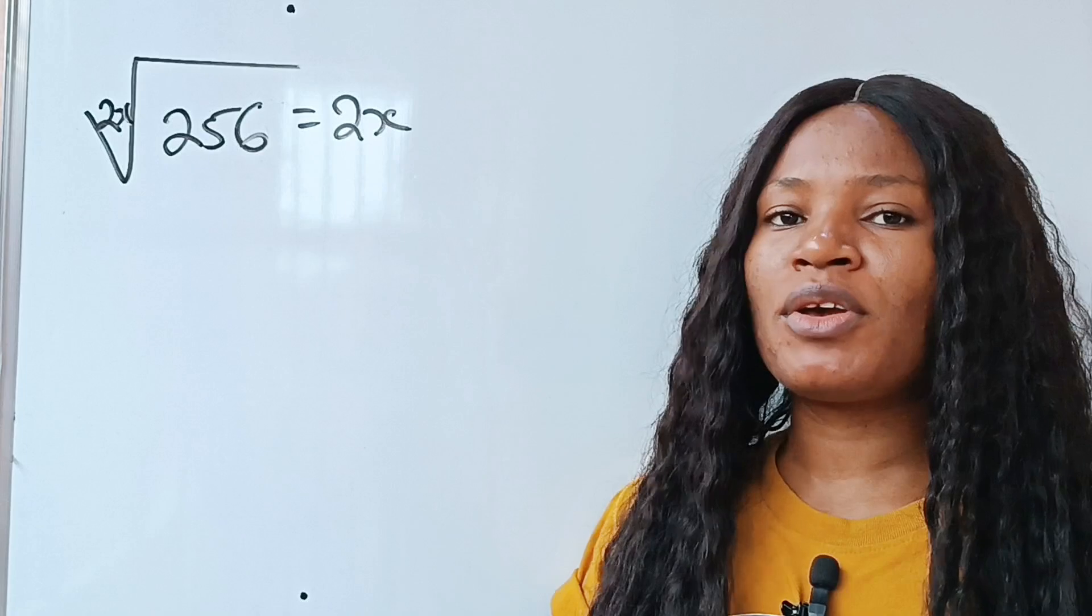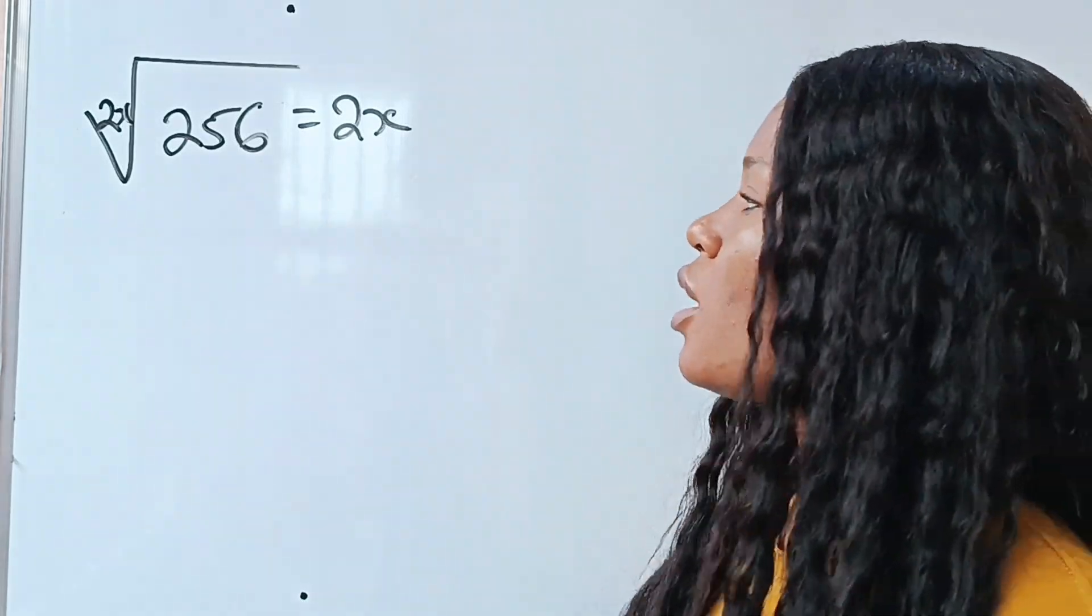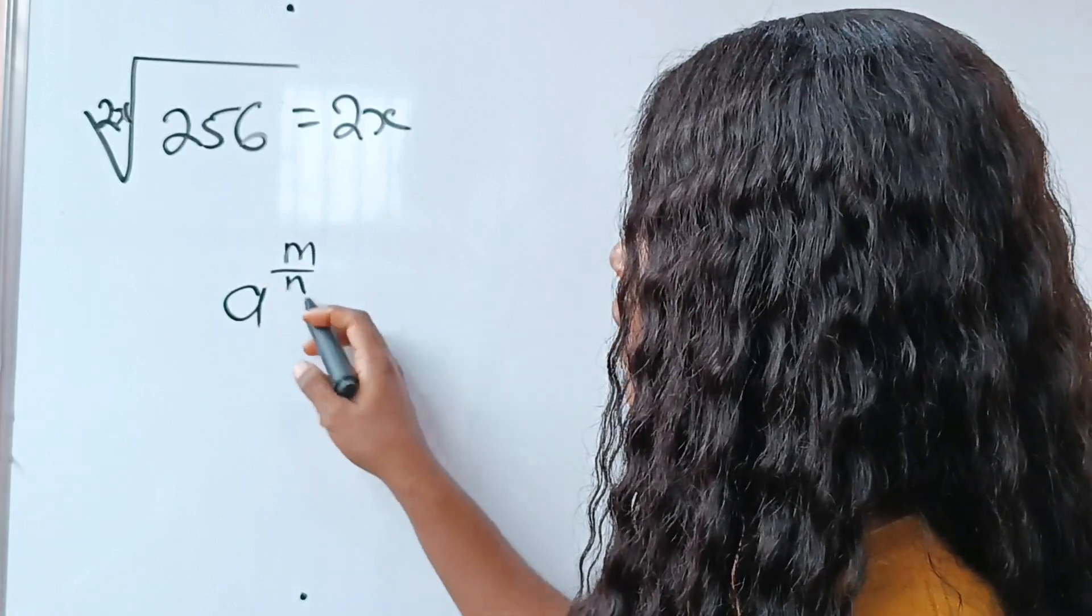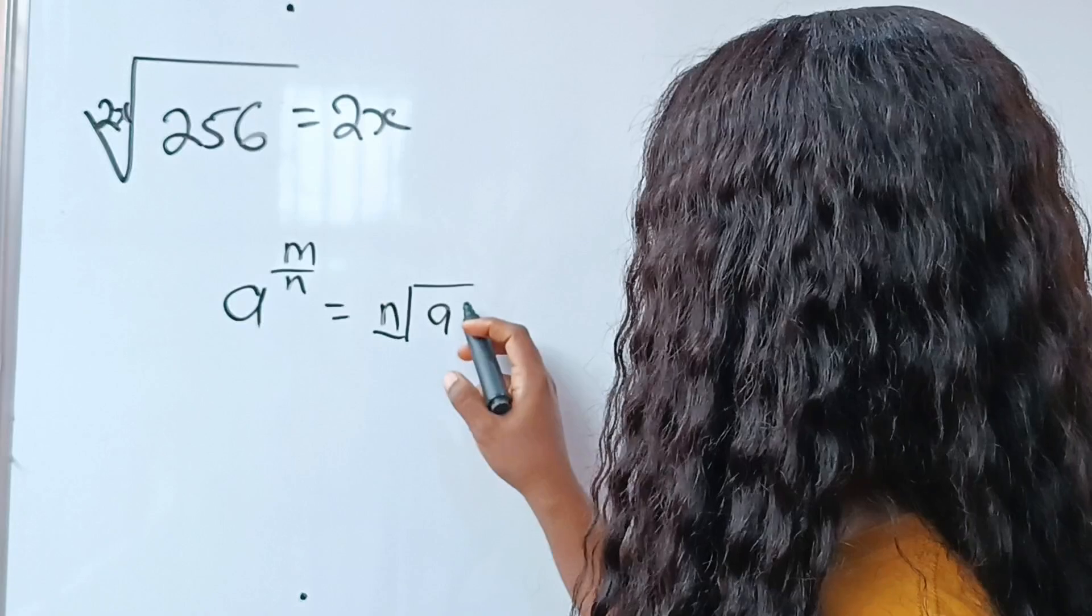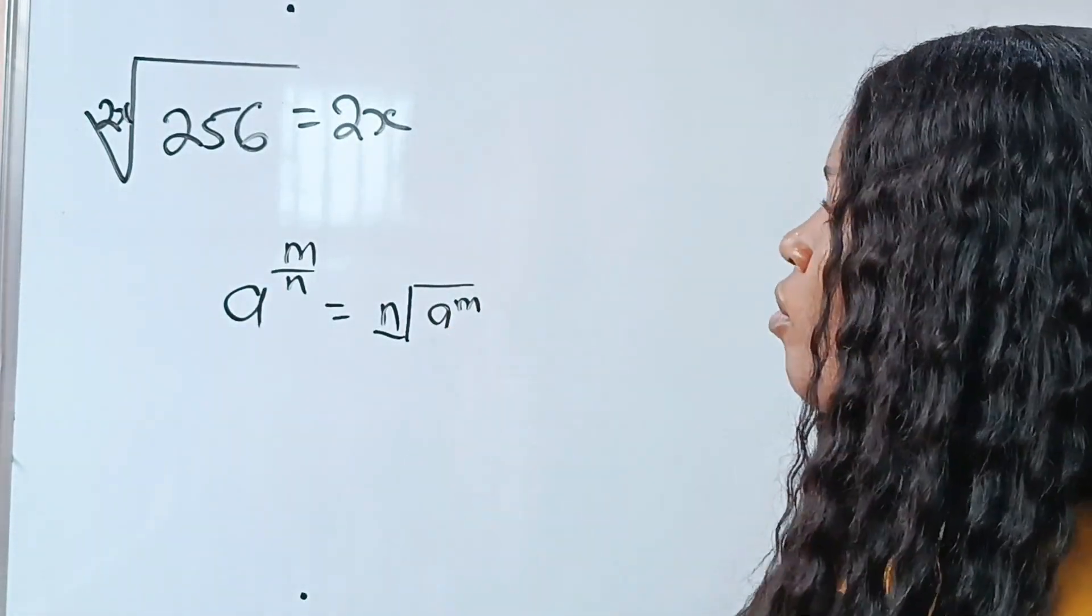Before that, let me introduce you to this law of indices or exponents. The law states that a to the power of m over n is equal to the nth root of a raised to the power of m.